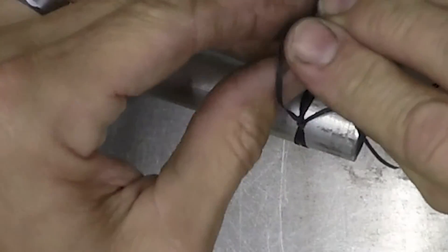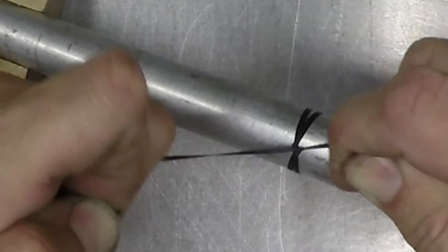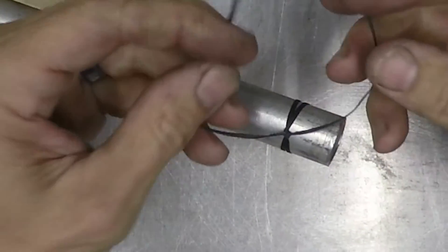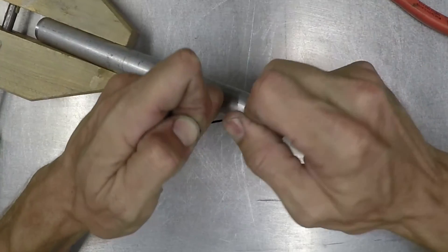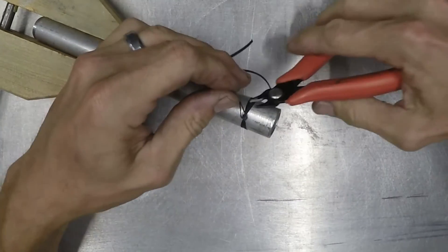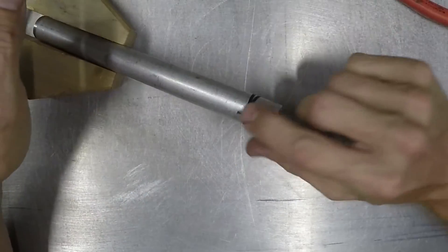Put a single overhand knot, like that, and if you really want to get crazy about it, you can put another overhand knot on top of it. Real super simple. Cut it off with a pair of dikes, and there you have it.